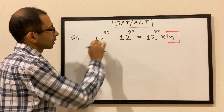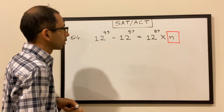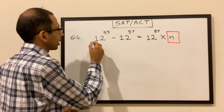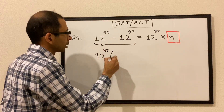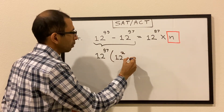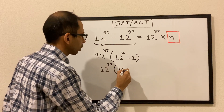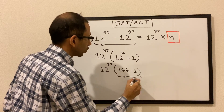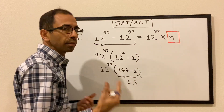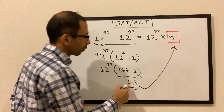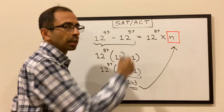Question 4: 12 to the power of 99 minus 12 to the power of 97 equals 12 to the power of 97 times n, where n is an integer and we have to find n. On the left side, we take 12^97 as a common factor, leaving 12² minus 1 inside the brackets. 12² is 144, so 144 minus 1 is 143. Looking at the right side, it is already in the form 12^97 times something, so n equals 143.